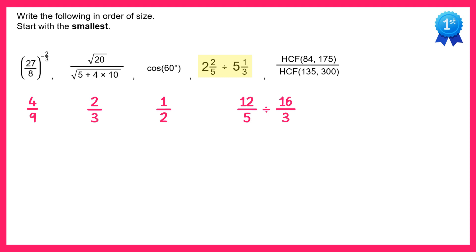To divide fractions you just multiply by the reciprocal, so we'll keep 12 over 5 and multiply by 3 over 16. 12 times 3 is 36, and 5 times 16 is 80, so we get 36 over 80, and this simplifies down to 9 over 20.